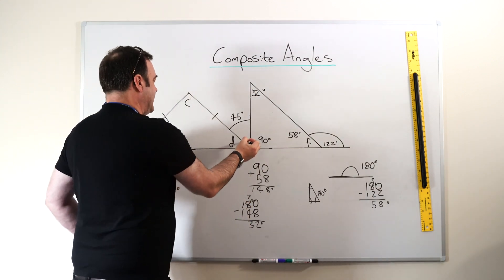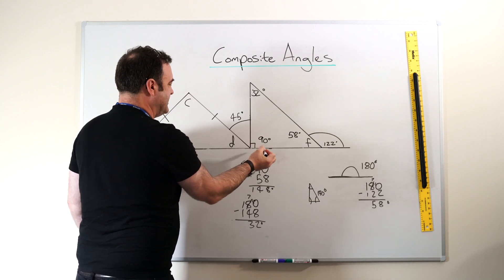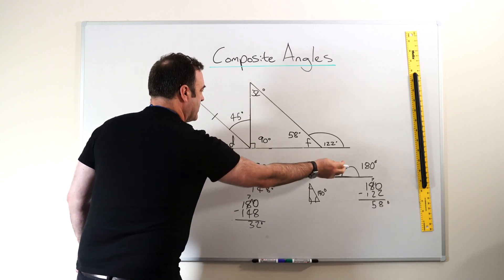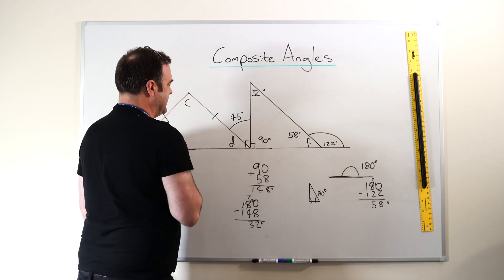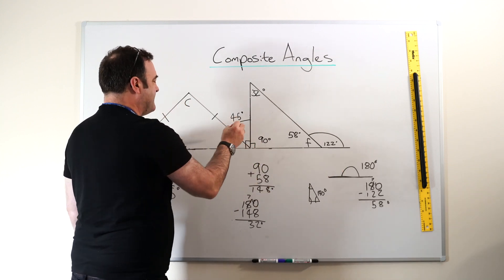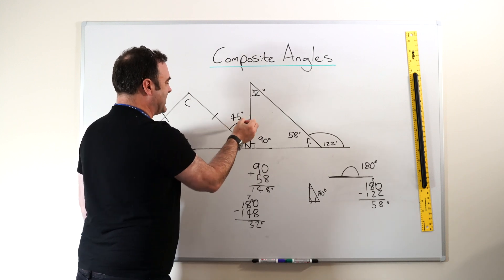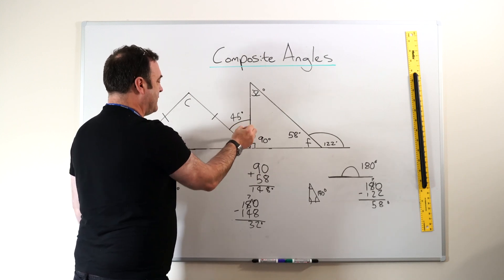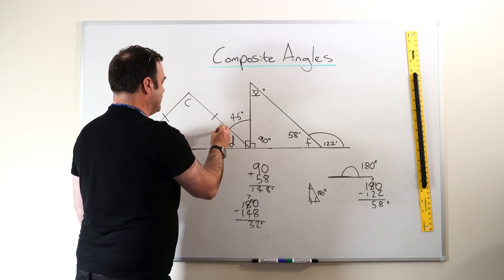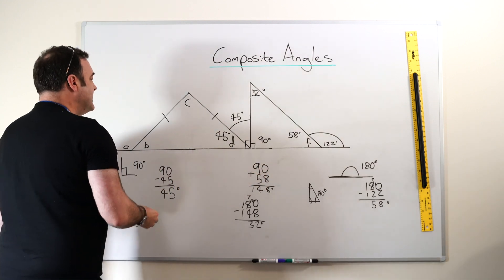What have we got here? If this is 90 degrees, we know it should be 180. We know that this is also 90 degrees. If that's 90 degrees and we subtract 45, that's half of 90, so we know that this should be 45.